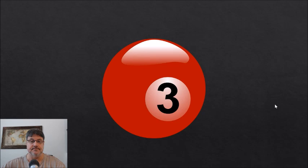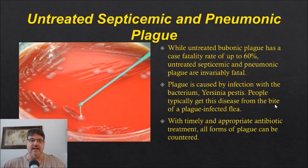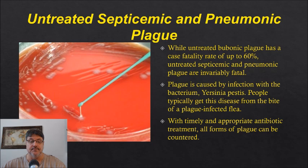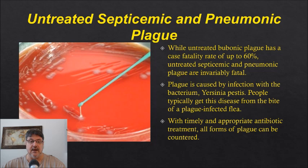Number three: untreated septicemic and pneumonic plague. While untreated bubonic plague has a case fatality rate of up to 60%, untreated septicemic and pneumonic plague are nearly always fatal. Plague is caused by infection with the bacterium Yersinia pestis, and people typically get this disease from the bite of a plague-infected flea. With timely and appropriate antibiotic treatment, all forms of plague can be countered.